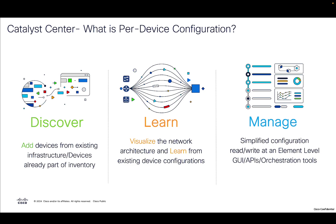We already talked about what per device configuration is in our previous video, but just to give a quick recap: this is one of the latest features introduced in 2379 where we enable customers to discover their wireless controllers. Your wireless controller could be an assurance-only controller, one managed by network profiles and site assignment, or one that has been migrated from Cisco Prime onto Catalyst Center. All these kinds of wireless controllers can be discovered, and we learn their configuration, give you a way to visualize it similar to what you'd see on the 9800 wireless controller, and allow management of the configurations using Catalyst Center itself.